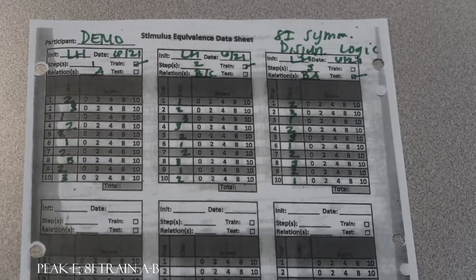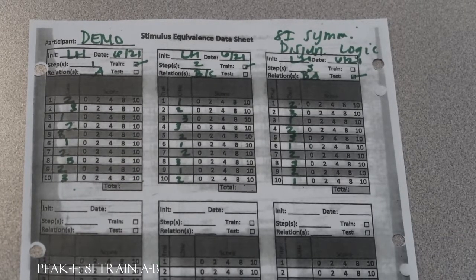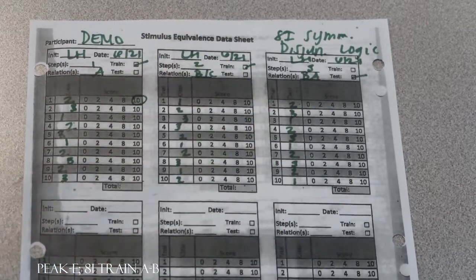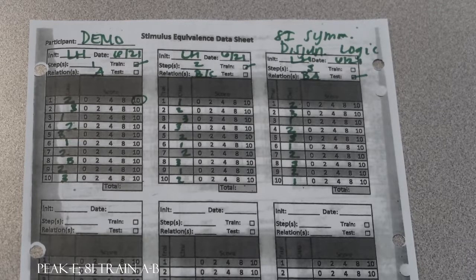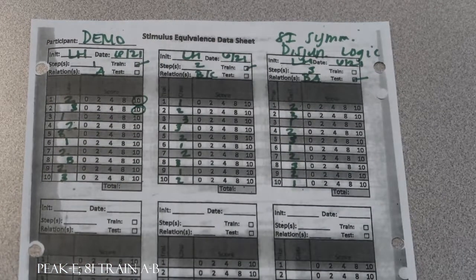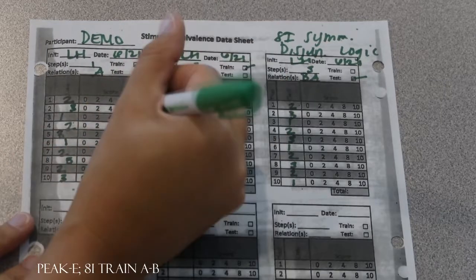All right. Say rainy day is the same as sunny day. Rainy day is the same as sunny day. Nice job. Say blue is the same as cyan. Blue is the same as cyan. Good. Say pet is the same as house animal. Pet is the same as house animal. Good.